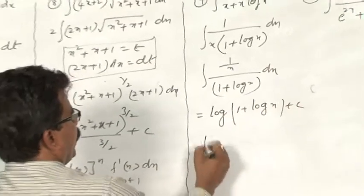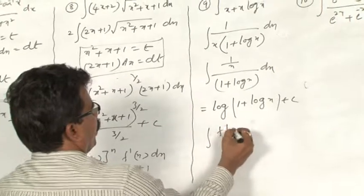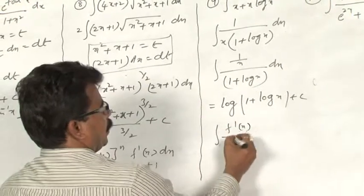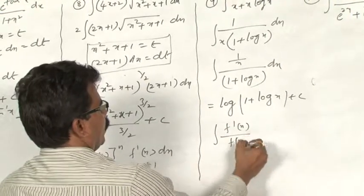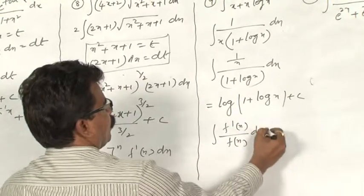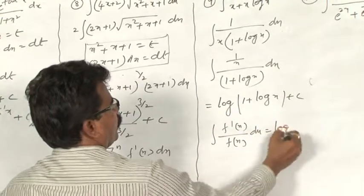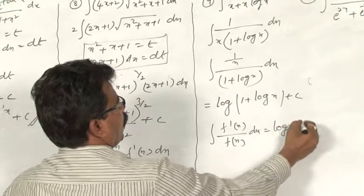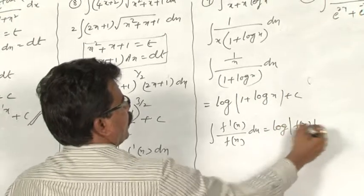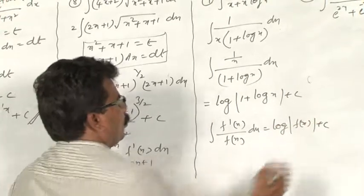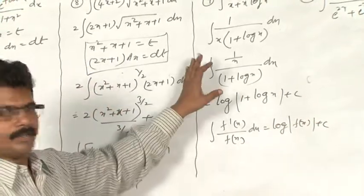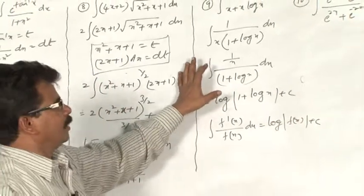For integral of 1/(x + x·log(x)) dx: the formula ∫f′(x)/f(x) dx = log|f(x)| has been applied here.